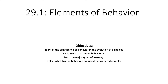Our objectives: identify the significance of behavior in the evolution of a species; explain what an innate behavior is; describe major types of learning; and explain what types of behaviors are usually considered complex. So let's dive in.